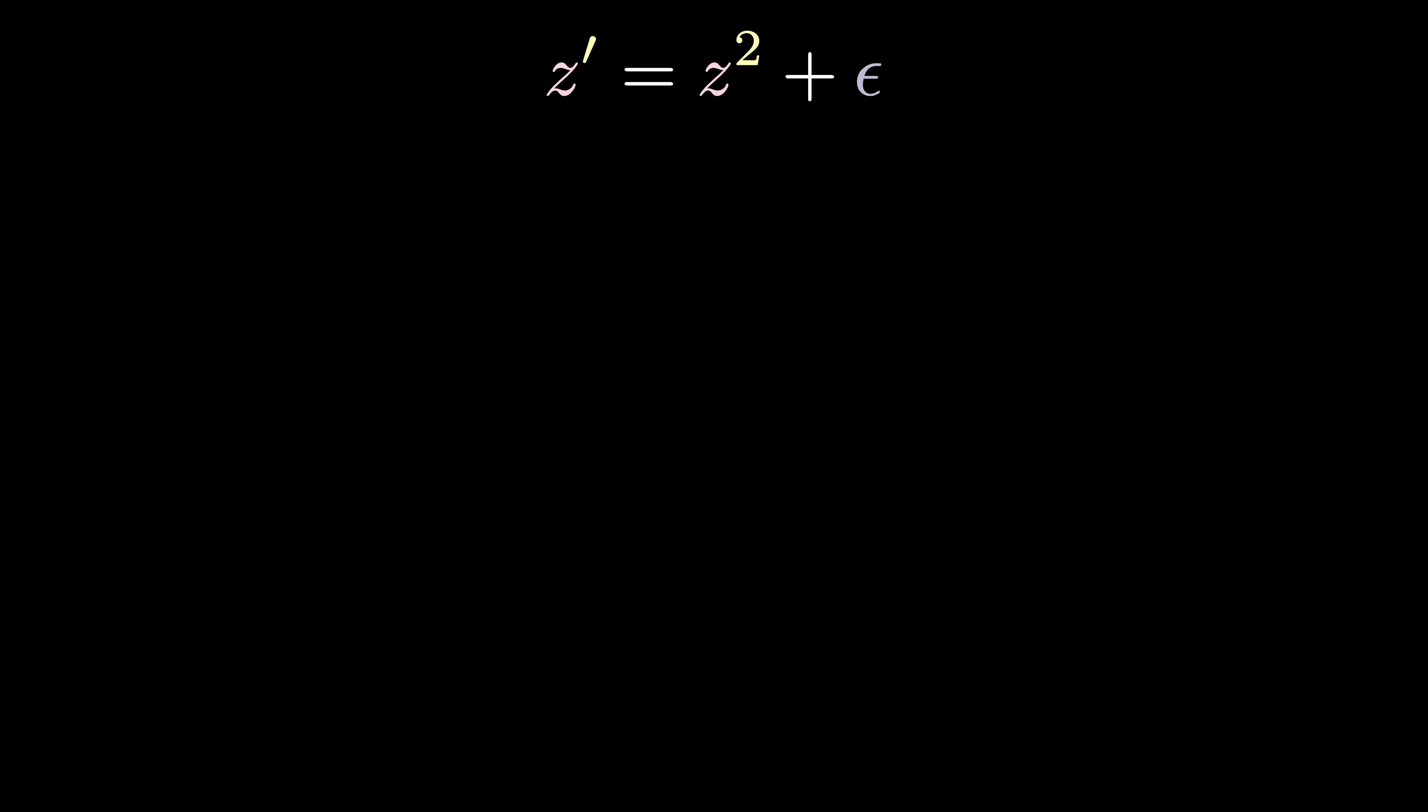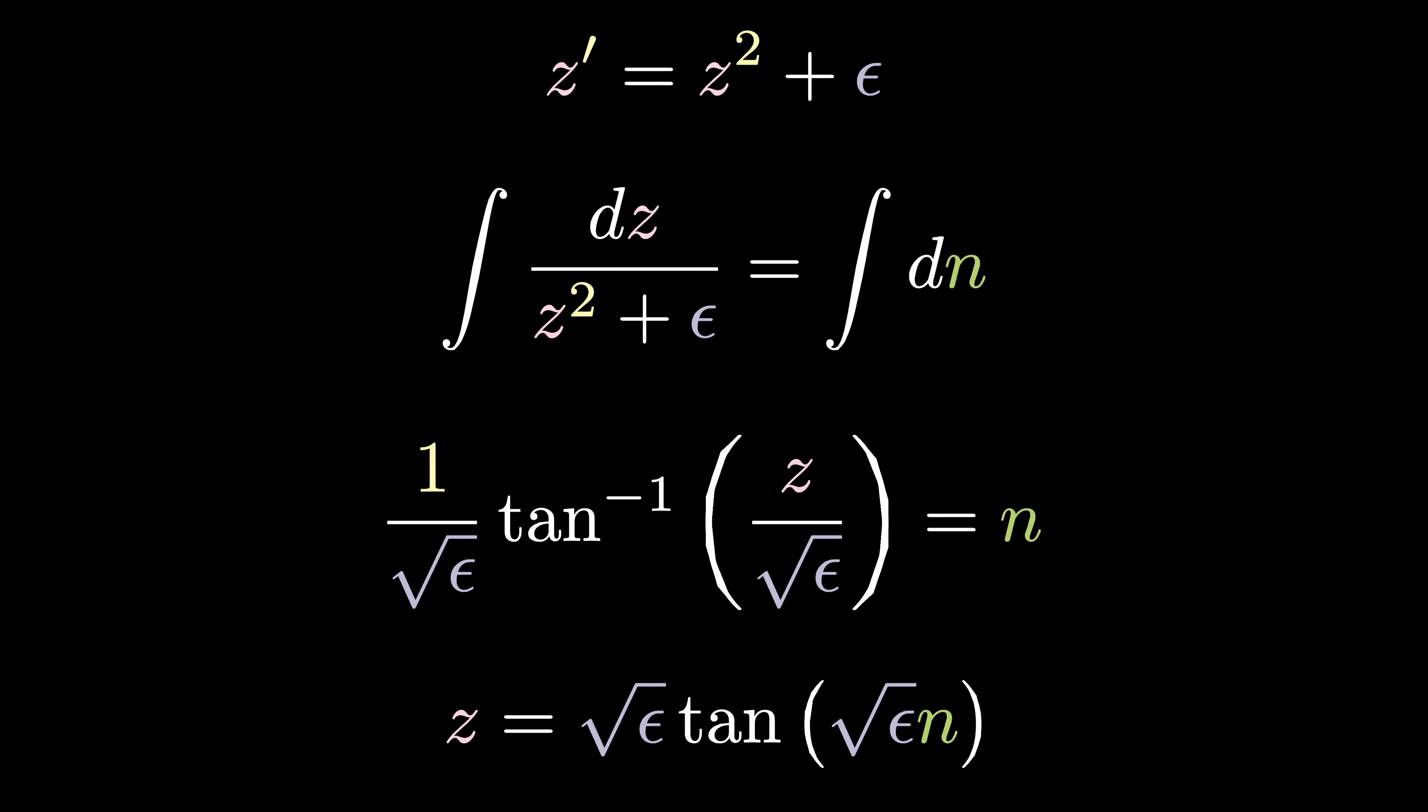And so, we have the differential equation z prime equals z squared plus epsilon. But let's take a step back. What exactly are we solving for? What is z of n? While assuming our smoothed out function with epsilon tending to 0, z sub n gives the value of the Mandelbrot function at the nth step.